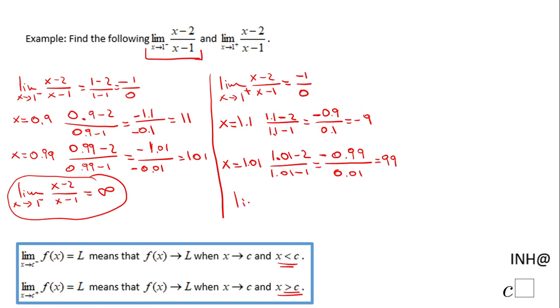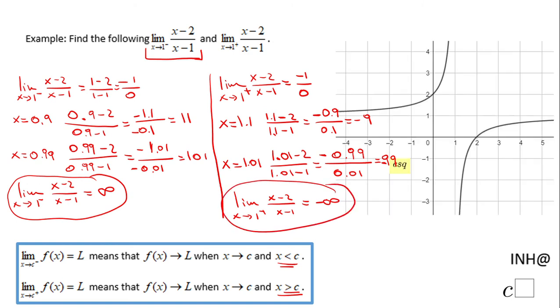So we can say the limit as x approaches 1 from the right of (x - 2) over (x - 1) is negative infinity.